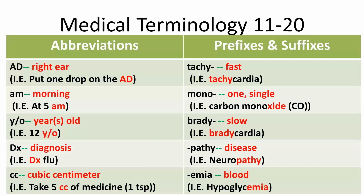Now for the prefixes and suffixes. Tachy means fast — so tachycardia means a heart rate that exceeds the normal range. Mono means one or single — for example, carbon monoxide, which has one oxygen atom.